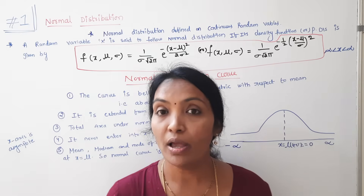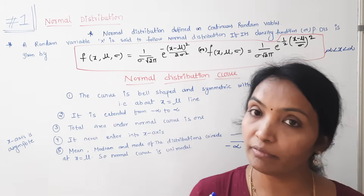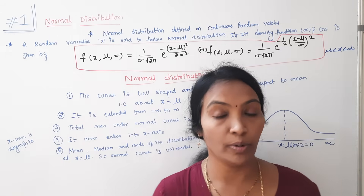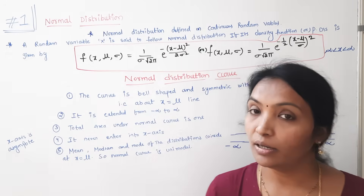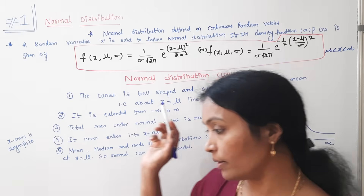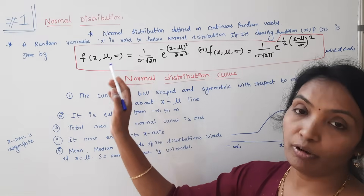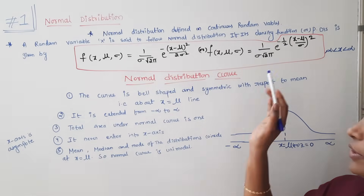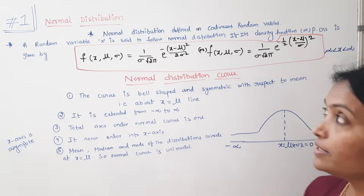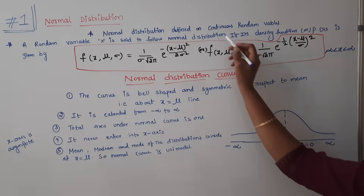There are two types of random variables: continuous random variables and discrete random variables. Discrete distributions include Poisson and binomial. Continuous random variable distributions include normal, geometric, uniform, and exponential. Normal distribution is defined on a continuous random variable.